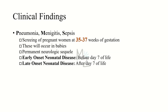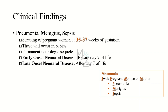There are two types of neonatal disease: early onset neonatal disease occurs before day seven of life, while late onset neonatal disease occurs after day seven of life. A mnemonic for pregnant women: S is for swabbing at 35 to 37 weeks and also for sepsis; P is for pregnant women who are swabbed and also for pneumonia; M is for mother or women (flip M to get W) and also for meningitis.